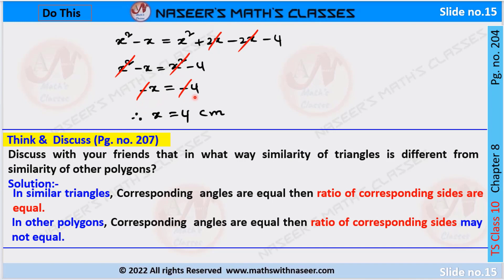Then we can write minus x is equal to minus 4. Here minus is common, after cancellation we get x is equal to 4 cm.